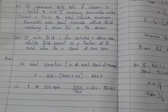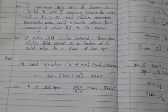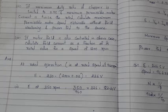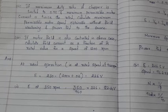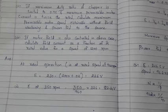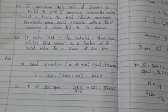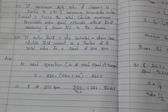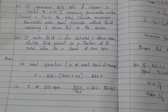The duty ratio of the chopper corresponds to 350 rpm. The motor rated speed is 960 rpm. The rated operation corresponds to the back EMF. The terminal voltage equals back EMF plus I_A times R_A. Then we find the back EMF corresponding to the rated speed.